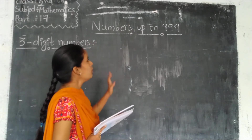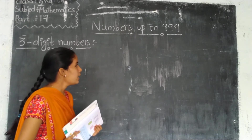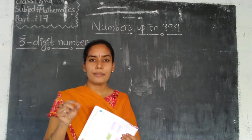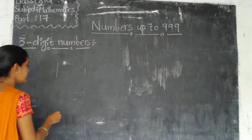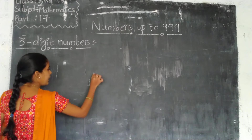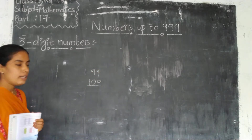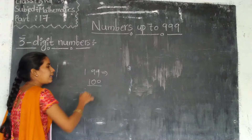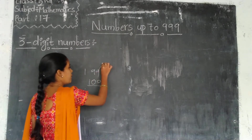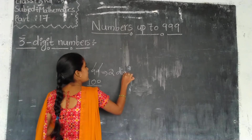The next chapter is numbers up to 999. Children, do you remember that in the last chapter we learnt up to 99 only? Yes, we learnt up to 99 only. That means we learnt only 2-digit numbers. Yes, we learnt 2-digit numbers.